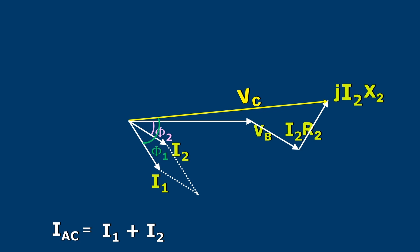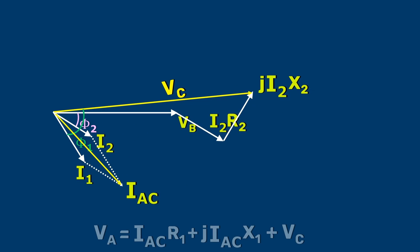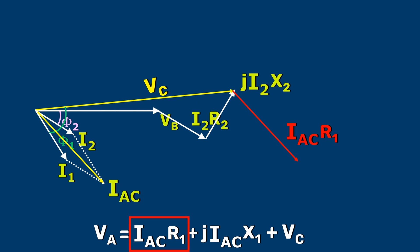The resultant of I1 and I2 gives IAC. Now, we can find IAC R1 and JIAC X1. We already have VC in our vector diagram. Using the head to tail method, we can find the resultant VA. That's all.